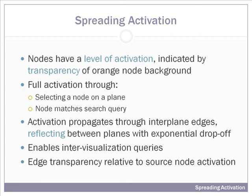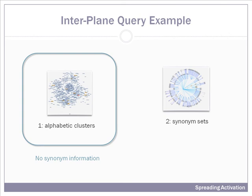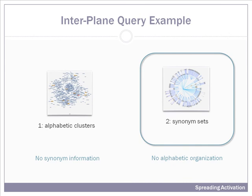Let's examine an example of spreading activation in use. If we have a first visualization, which is the alphabetic clustering of words, and this provides no information about the synonymy relationships in the dataset. And we have a second visualization, which consists of a tree graph in which every node is a set of synonyms. But in this set visualization, we have no information about alphabetic organization. How can we use spreading activation to see the synonyms in visualization one, the alphabetic view?